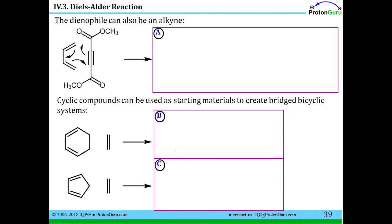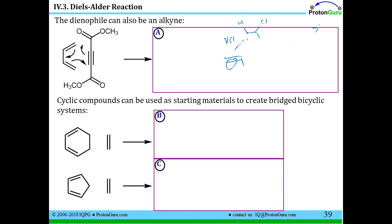Another thing to point out: if you think back to section three, we saw a lot of reactions that alkenes can do — and alkynes can also do these reactions. If I take HCl and add it to an alkene, I get Cl and H added. If I do the same thing with an alkyne, the pi bond does the same thing — I end up with Cl and H — and I could then add again because I still have a pi bond. The point is that alkenes and alkynes both have pi bonds that can react in very similar ways.